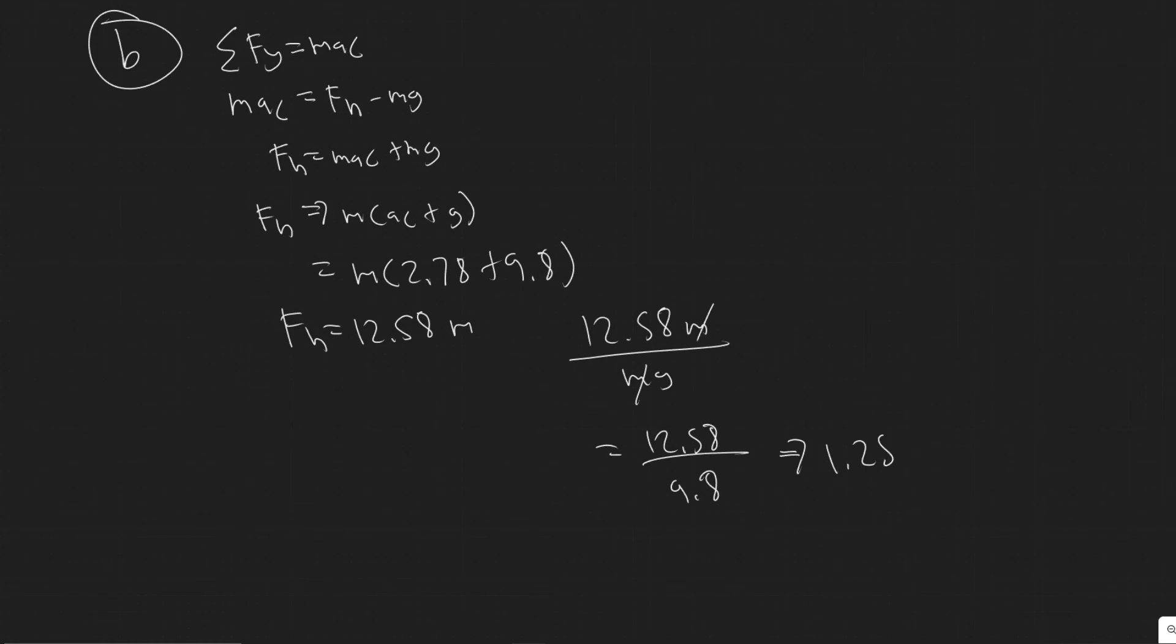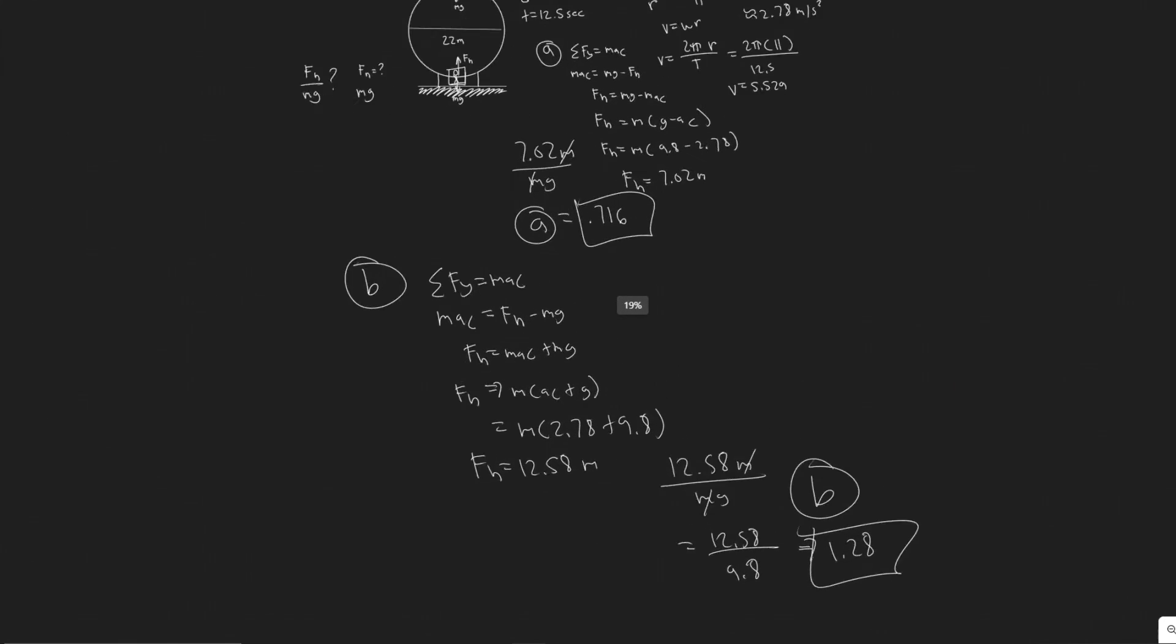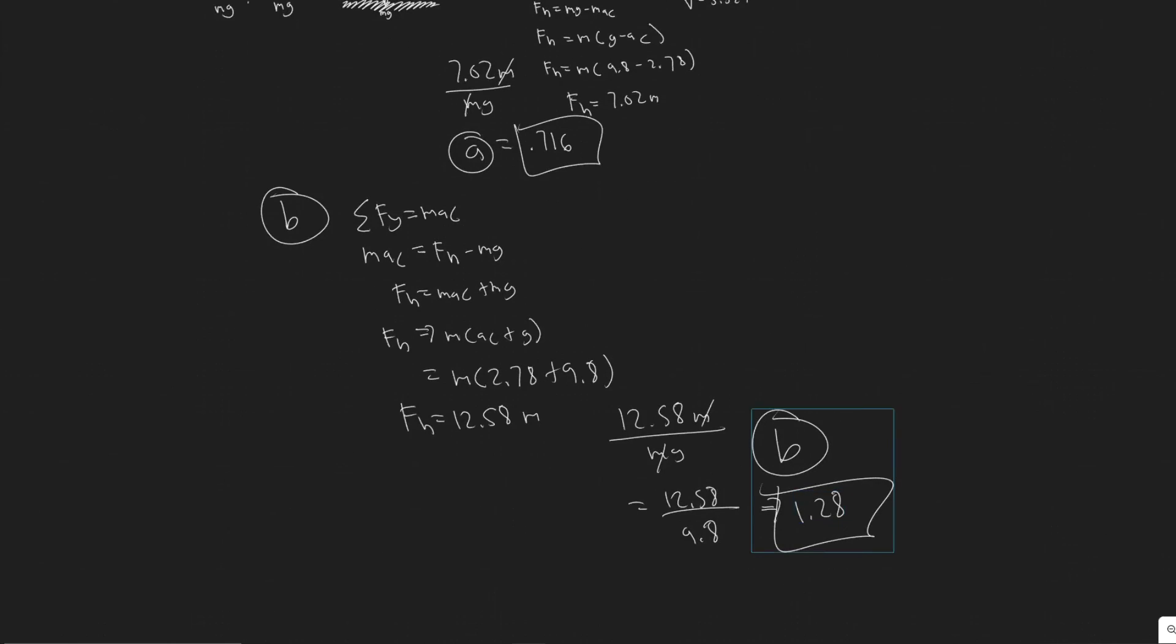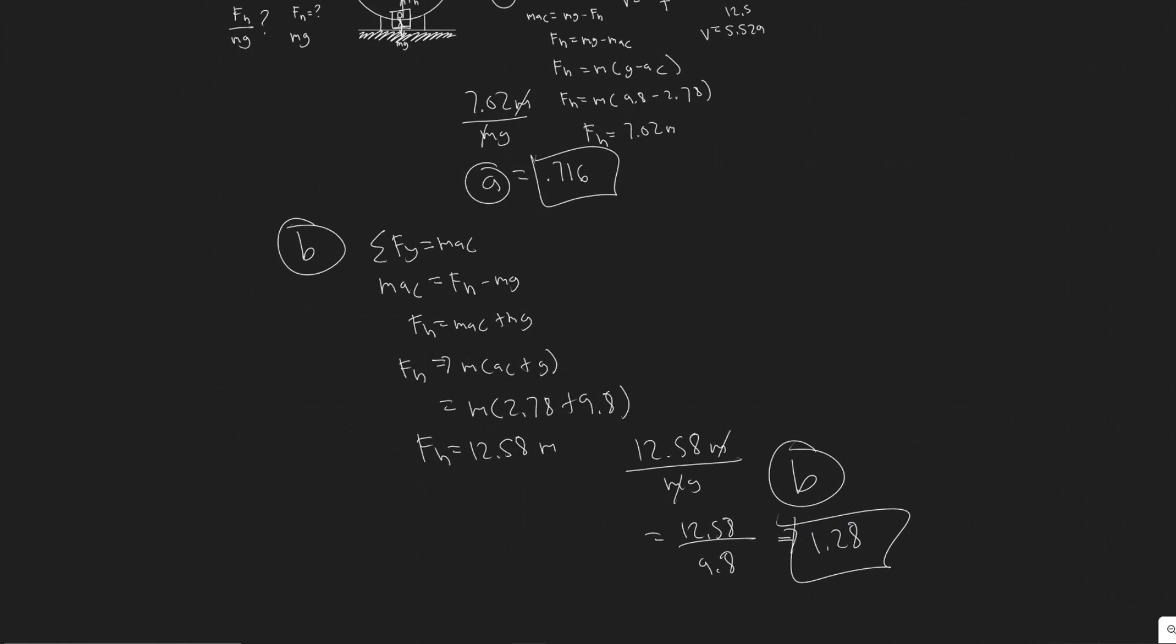So notice the value is greater for this one. So 1.28. That's your ratio. And your answer to B. But yeah, so notice in this one, it's less than the real weight, this one is greater, or the apparent weight is greater than the real weight.